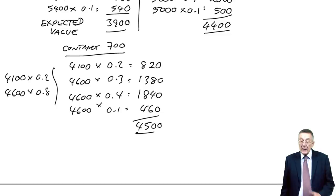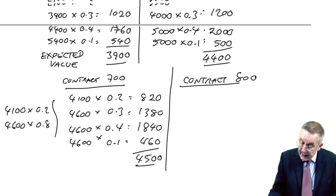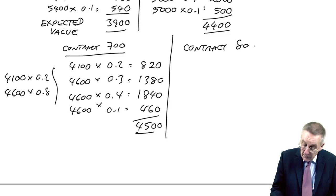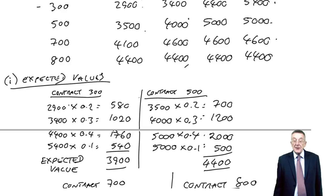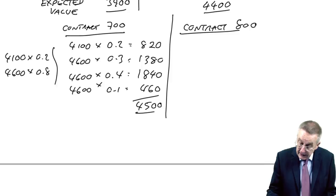And finally, of course, a contract of 800. Well here, for heaven's sake, don't start multiplying by probabilities. It's 4,400 whatever happens. And so although if you want to multiply each of them by 0.2, 0.3, 0.4, 0.1, surely it's going to come to 4,400. If you don't believe me, check. But it does seem a bit of a waste of time to multiply that one.